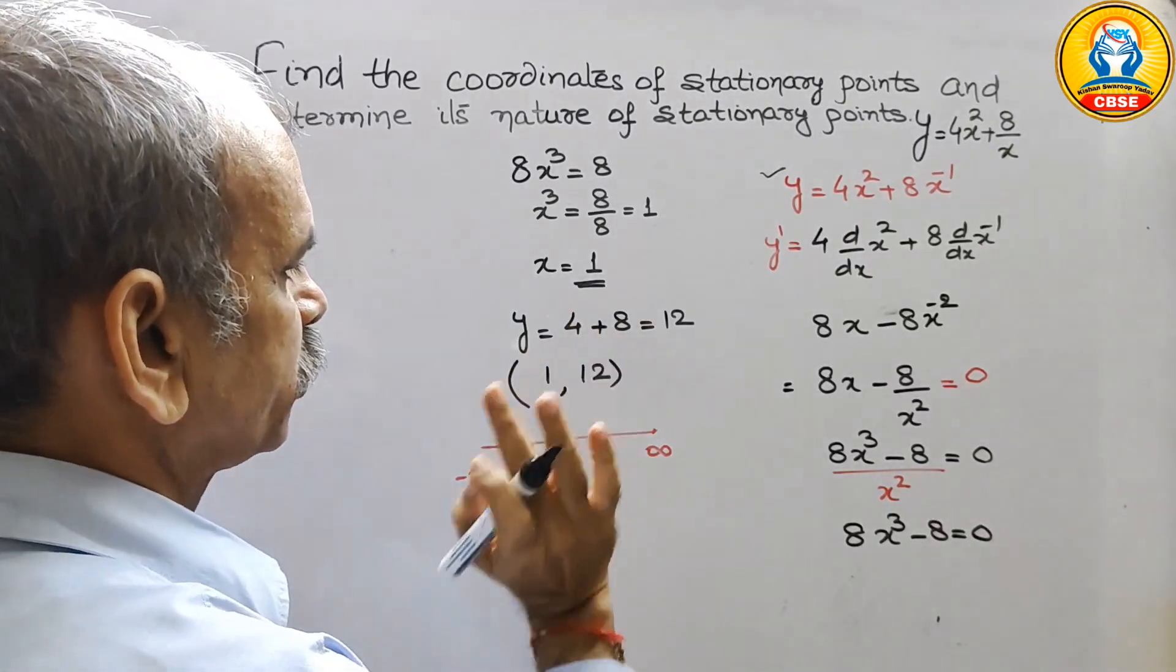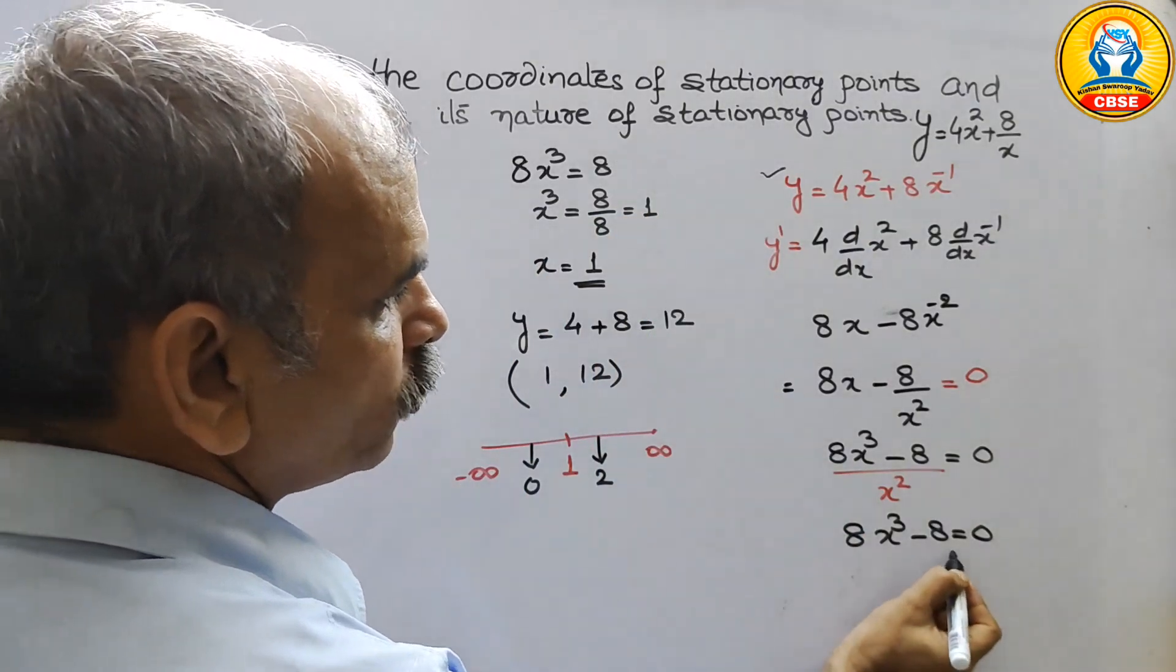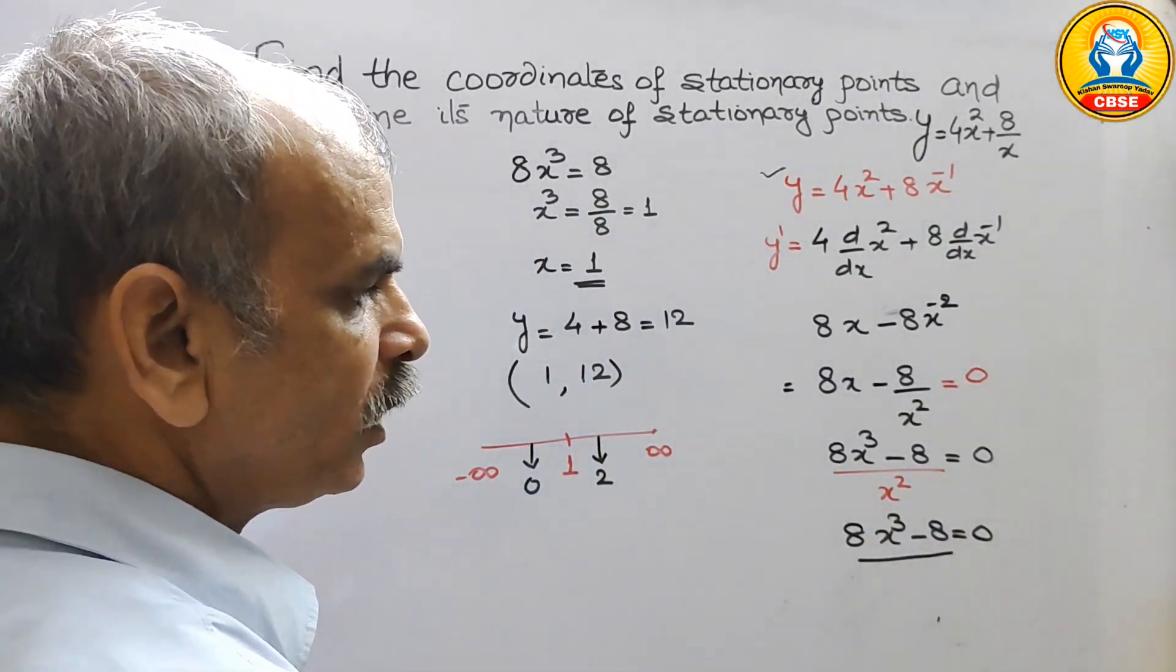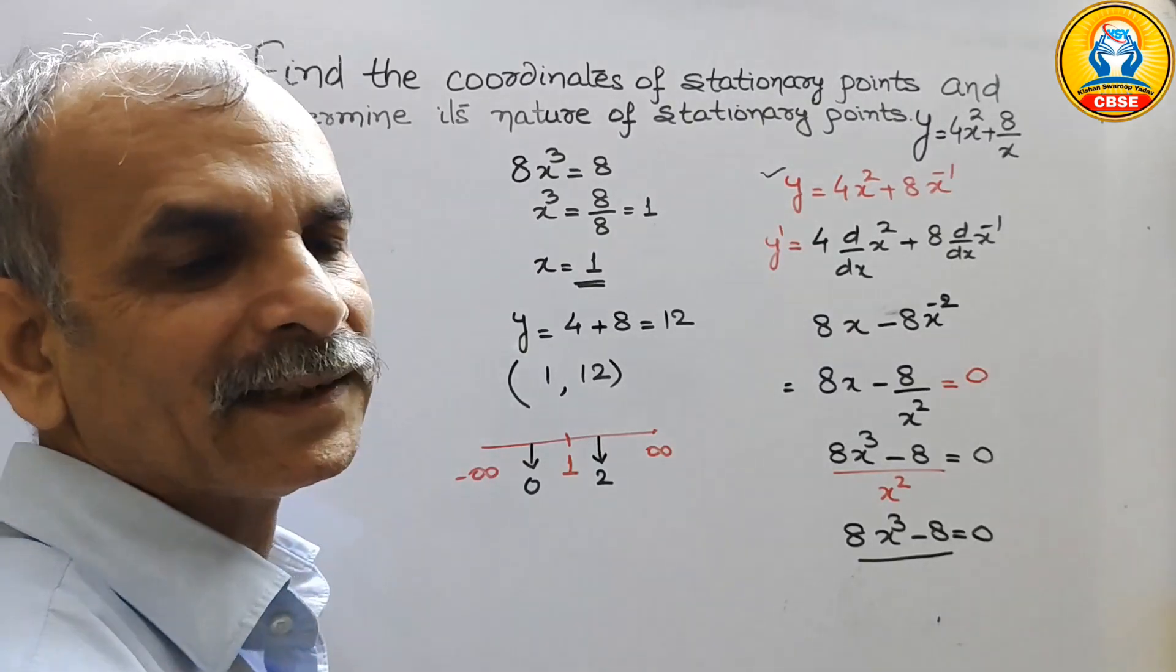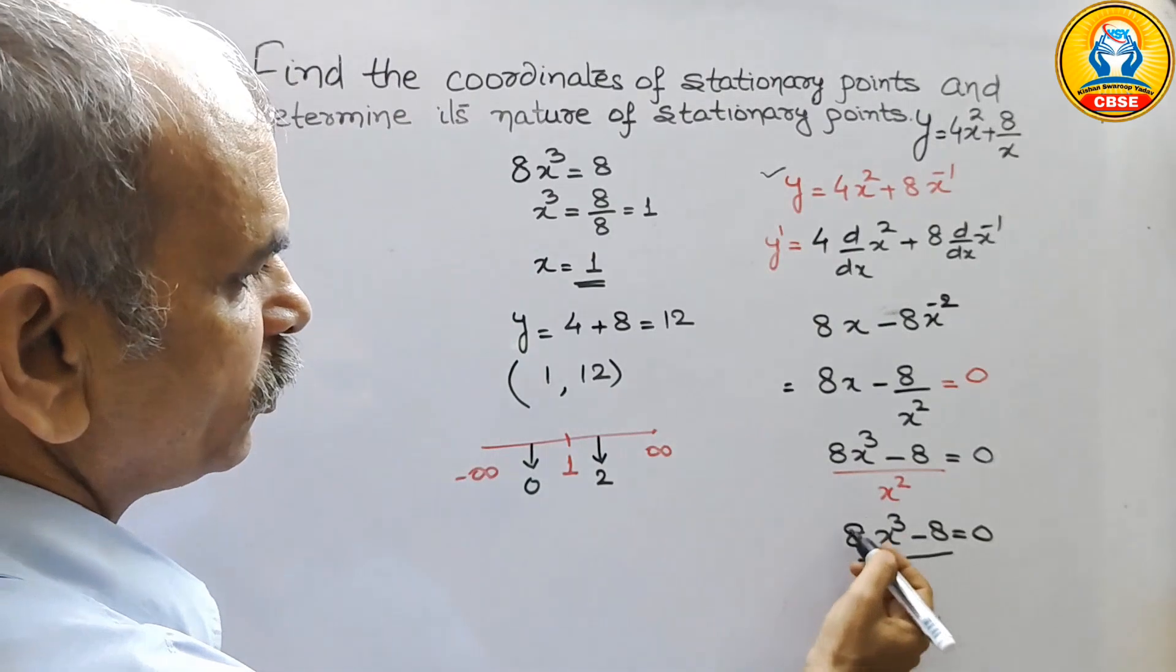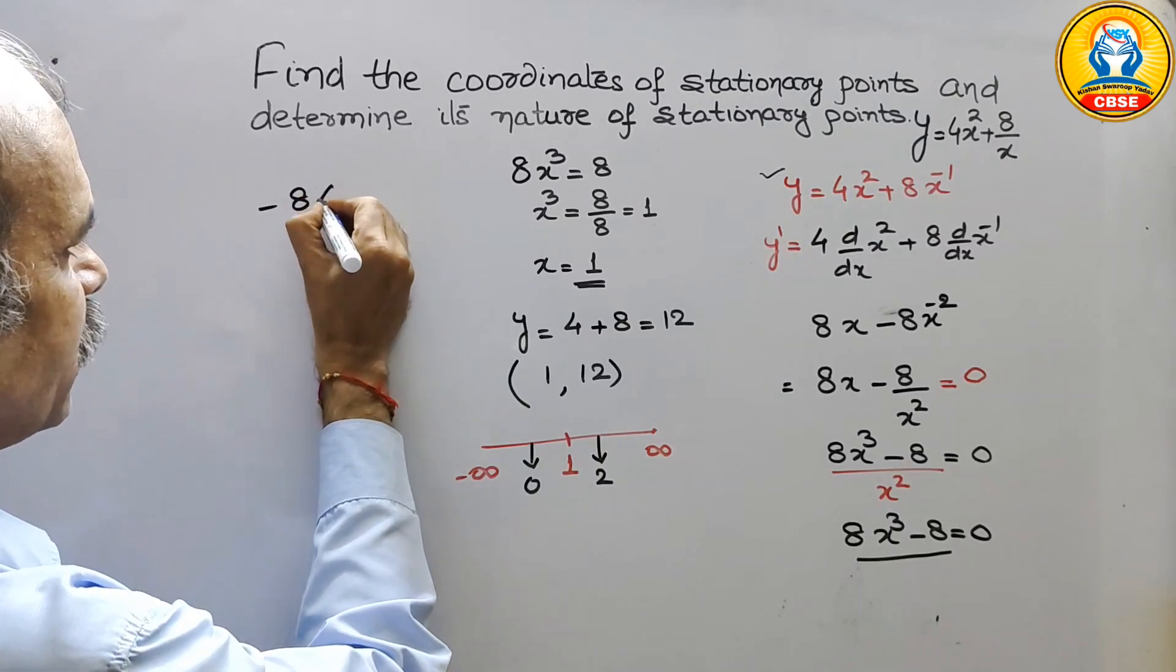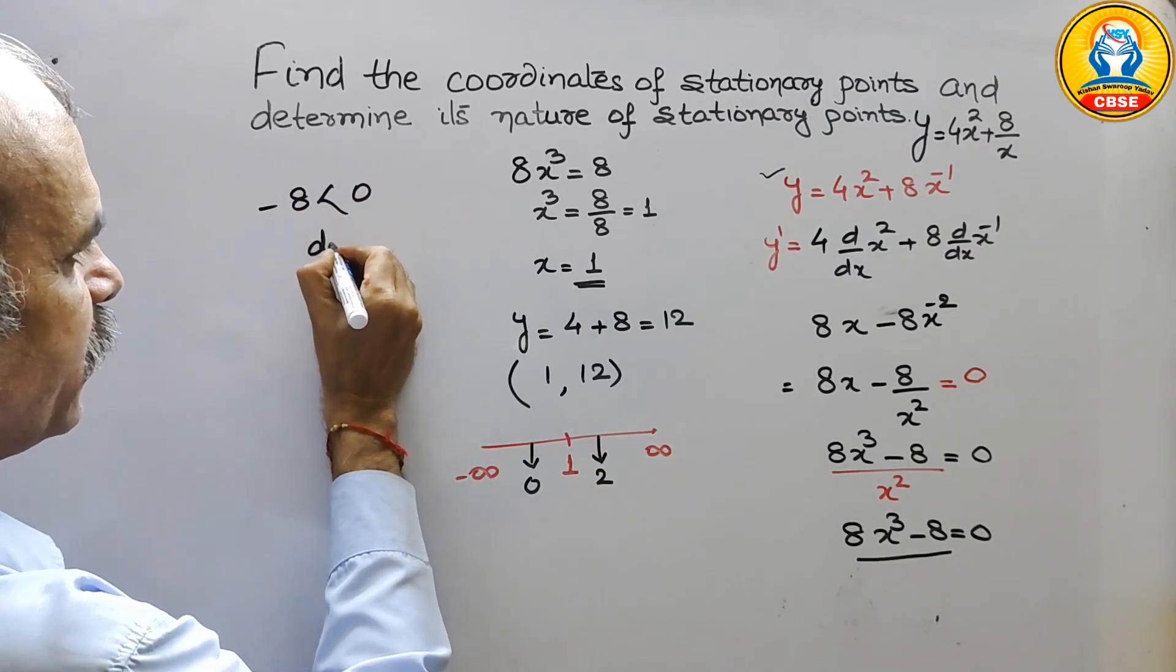Now substitute 0 first, where we will substitute here, only 8x cube minus 8. So we will get this is 0 that means we will get minus 8 which is less than 0 that means it is decreasing.